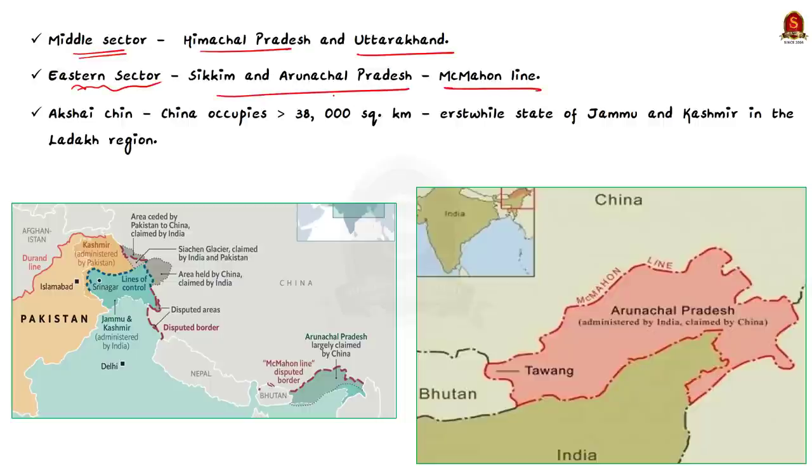India claims that China occupies more than 38,000 square kilometers in the erstwhile state of Jammu and Kashmir in the Ladakh region. This region is known as Aksai Chin. You can see this disputed area in this image. In the northeast, India recognizes the McMahon line and it considers it to be the actual line of control between India and China. But China does not recognize the McMahon line. You can see the McMahon line in this image. Having seen the areas of conflict with the brief history of India-China relations, now let us see what is driving India's imports from China.